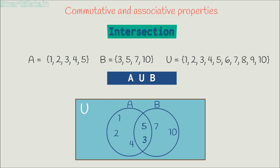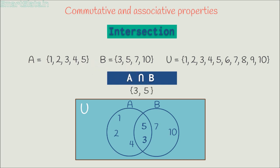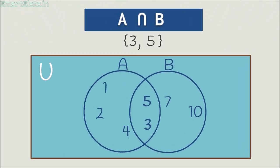Let's do the intersection of these two sets. It is the set of all elements which are common to both A and B. Elements 3 and 5 are common among these two sets, and hence the intersection is the set consisting of 3 and 5. See the diagrammatic representation — the dark area is the intersection part of these two sets.